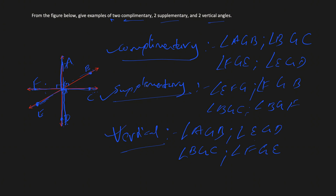I hope this was easy to understand. Once you know the properties of complementary, supplementary, and vertical angles, it becomes much easier to identify all the different angles for each class given a figure.